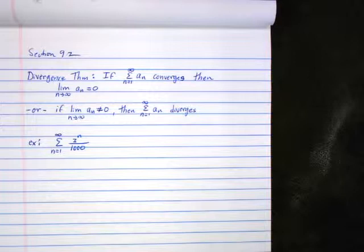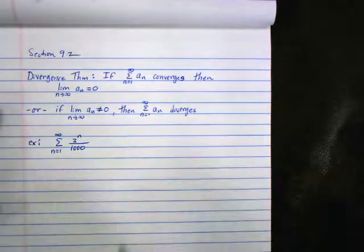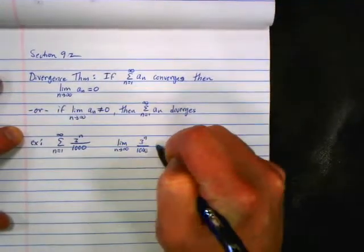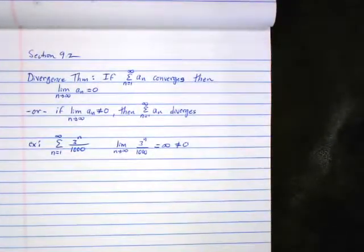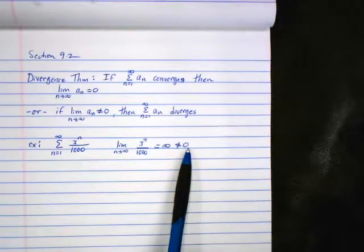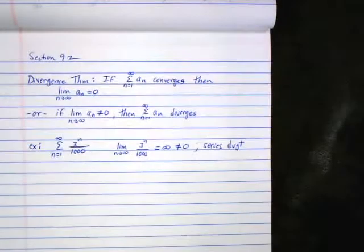Consider the sum from n equals 1 to infinity of 3^n over 1000. The limit as n goes to infinity of 3^n over 1000 is infinity, which is not equal to zero. Why is it important that it's not equal to zero? So we can use the divergence theorem. If this limit is not equal to zero, the series diverges. The divergence theorem shows that it diverges.